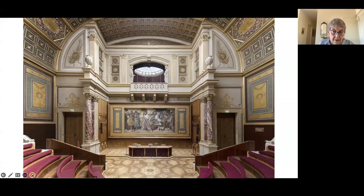Jacques-Louis David, in the late 18th century, was denied winning the Prix de Rome three years in a row and tried to commit suicide, essentially starving himself to death. Manet was also turned down. Many artists we now look back on as great were rejected.